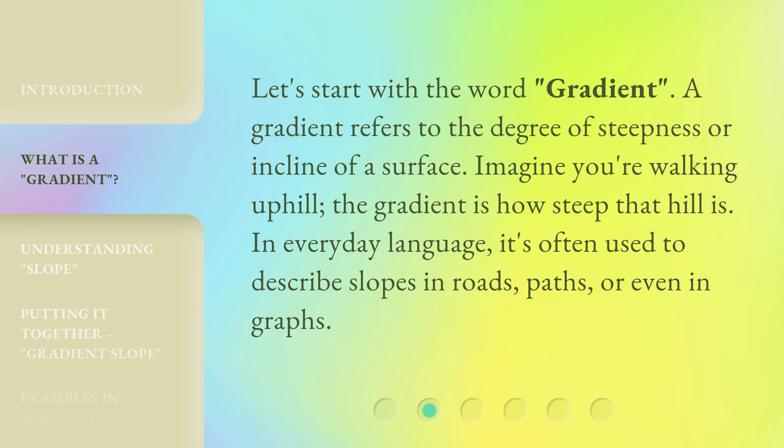Let's start with the word gradient. A gradient refers to the degree of steepness or incline of a surface. Imagine you're walking uphill — the gradient is how steep that hill is. In everyday language, it's often used to describe slopes in roads, paths, or even in graphs.